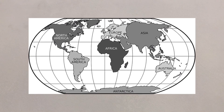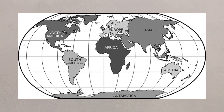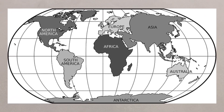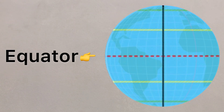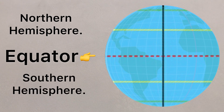There are a few really important lines of latitude and longitude that you should be aware of. The equator is probably the most famous of all the lines of latitude and longitude, and it separates the northern hemisphere from the southern hemisphere.